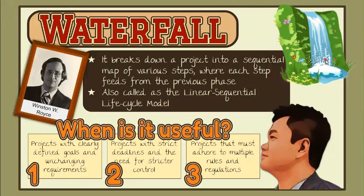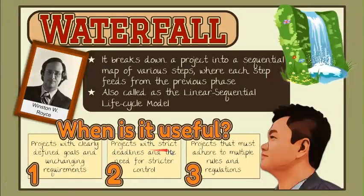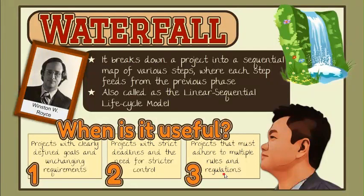This model is appropriate for projects with clearly defined goals and unchanging requirements, like small school website development, projects with strict deadlines and the need for stricter control, predictable budget, and timelines, such as governmental projects. Projects that must adhere to multiple rules and regulations, provided that enough resources are available — for example, healthcare projects.